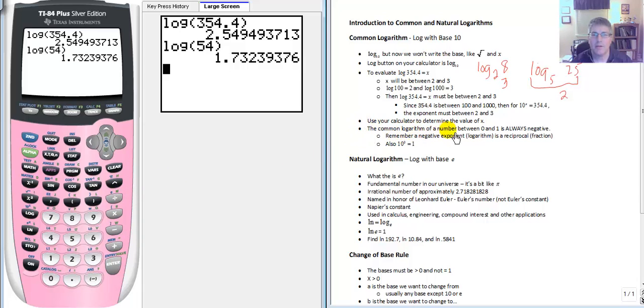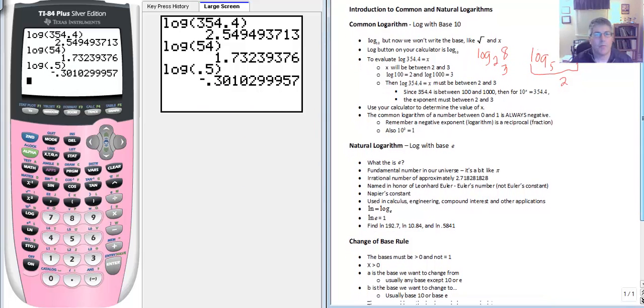So the common logarithm of a number between 0 and 1 will always be negative. And remember a negative exponent is a reciprocal or fraction. So also remember that 10 to the 0 equals 1. So log of 0.5, there's our negative answer. And 0.5 is between 0 and 1. So that is a summary of the common logarithm.